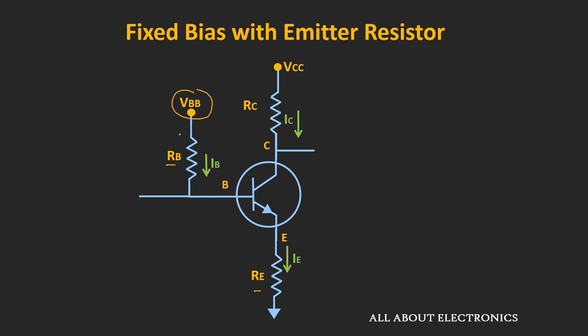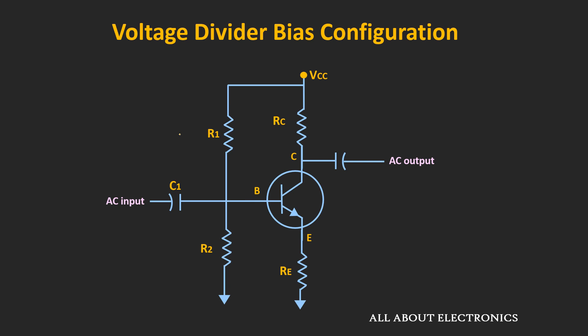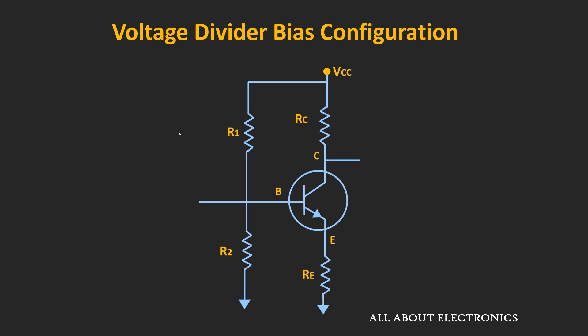And that is exactly what is done in this voltage divider biasing configuration. Now, as we are interested in the DC analysis, for the DC analysis, all these capacitors will act as an open circuit. And if you see the equivalent circuit, then it can be represented as follows.